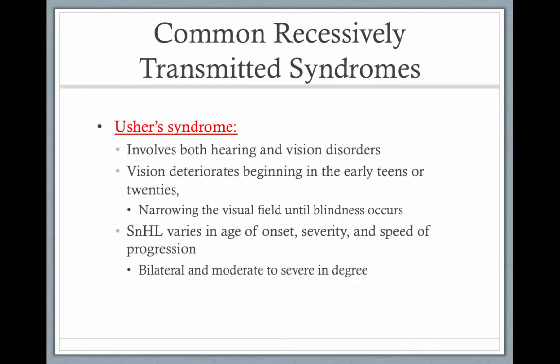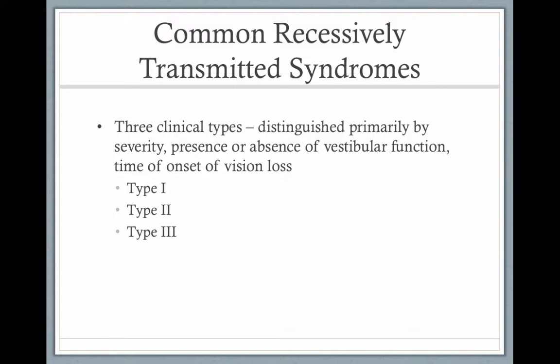With Usher syndrome, a child could be born with normal hearing and vision and then gradually lose either or both through adolescence. It's a little scary and shocking. There's no history of it in my family — I've never heard of anyone being blind or deaf — but it's recessive and we carry these things. It's amazing how the body works and how many things have to go right for there to be a healthy baby.